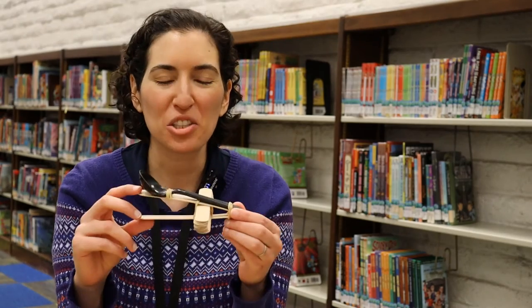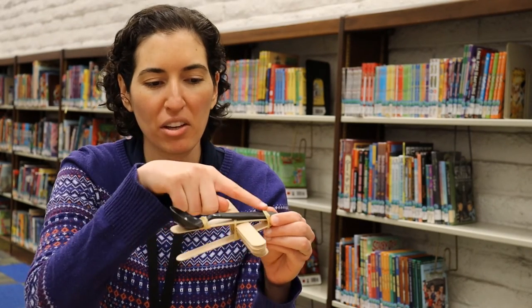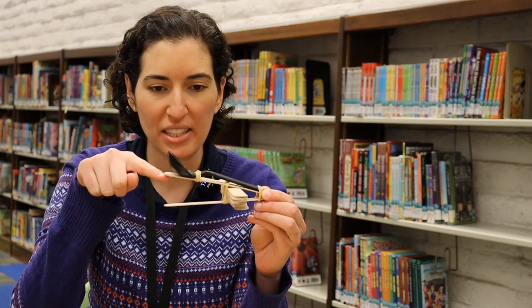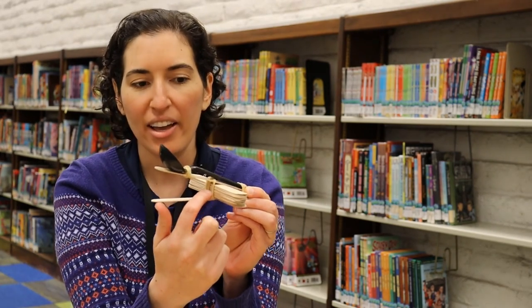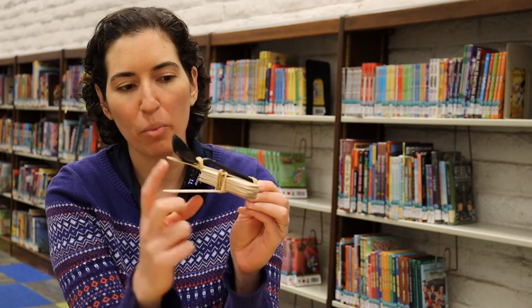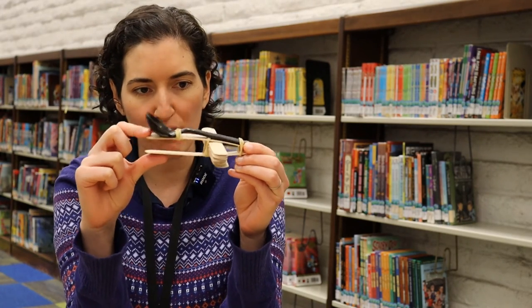So you have just created a simple machine. This is a lever. We have the top board here where the spoon is laying, and that is our lever. The center where it's all connected is called the fulcrum, and that's actually where it pivots. See, it kind of bends up and down from there.